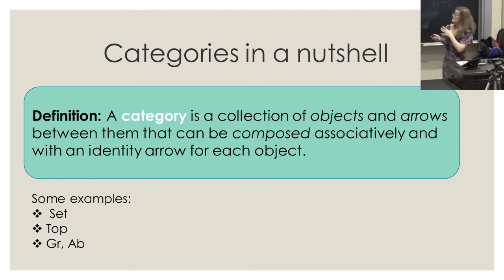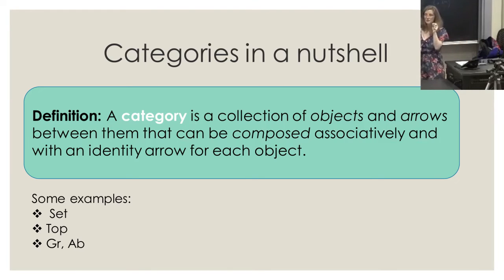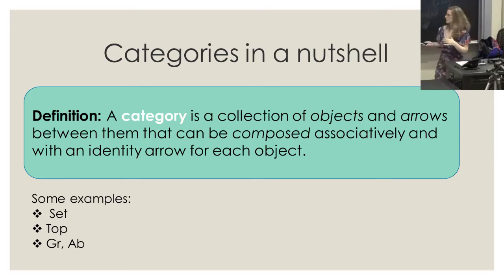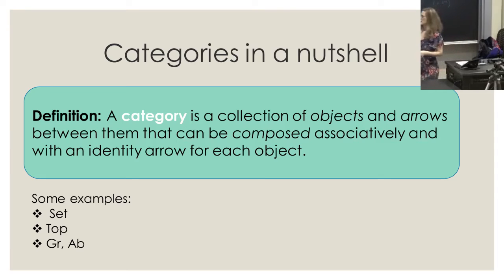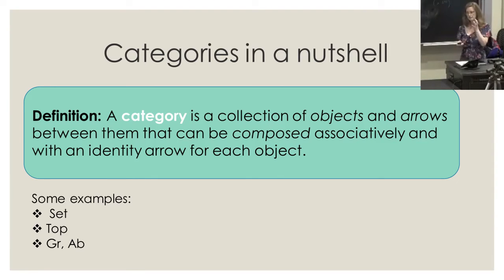Two key ideas in category theory: first, objects are not studied via their elements but via the arrows between them, using universal properties. Second, equality is often too much to ask — we instead ask for isomorphism, i.e., invertible maps between objects. When studying groups, I don't care about the specific presentation; two isomorphic groups are the same to me. This different philosophy lets us study various fields from a unified abstract point of view.